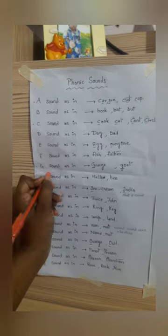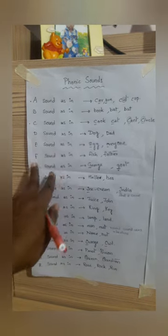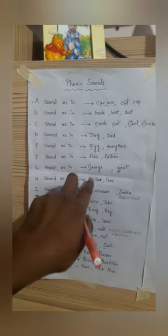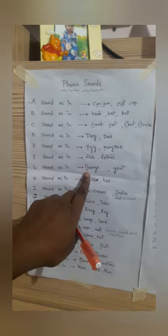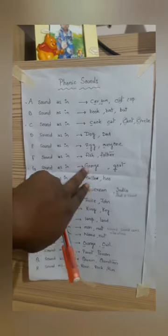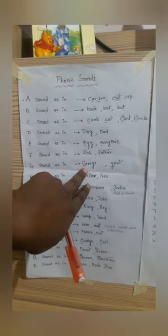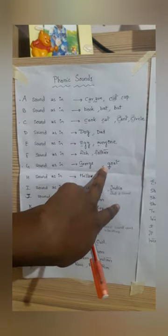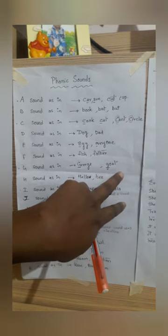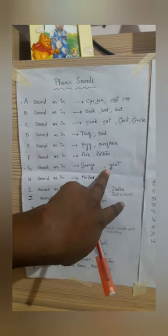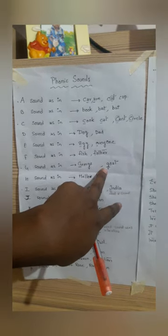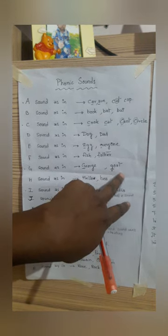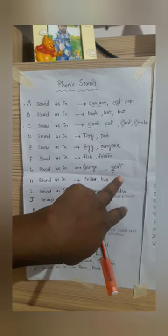Now coming to the letter G, it has two sounds again. In George, the sound of G is 'j'. And coming to the word G, O, A, T — the sound of G will change into 'g' — goat.